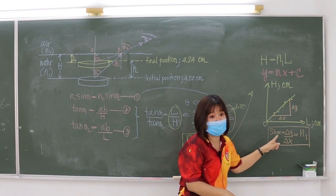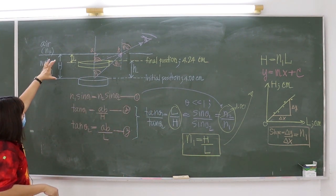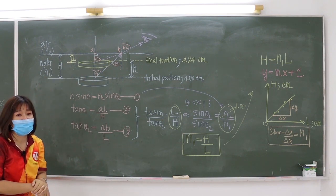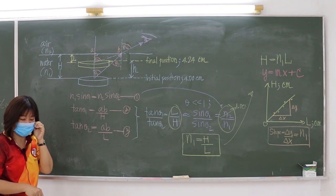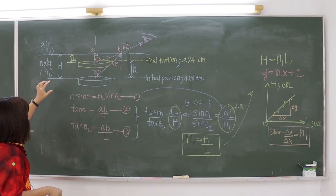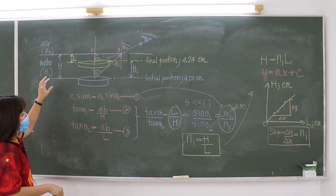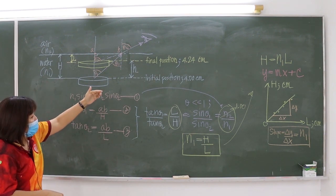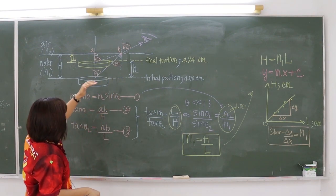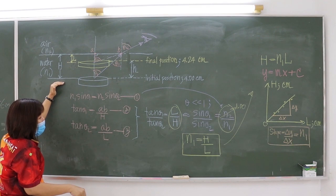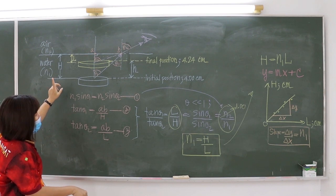For part 2, you change from water to a transparent sheet and repeat the same procedure as part 1. The big H for the transparent sheet is just the thickness of the sheet. Since you only have one transparent sheet, you cannot vary H, and therefore there is no graph. Instead, you vary the initial position.